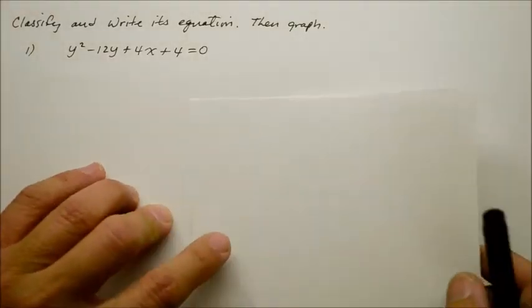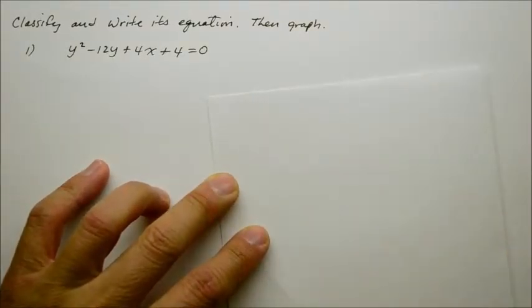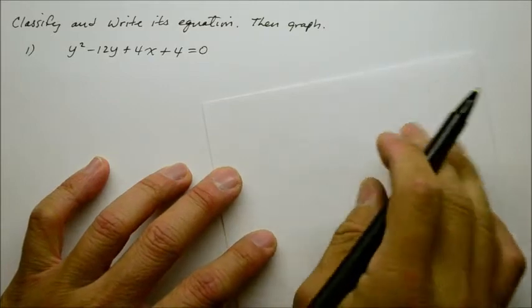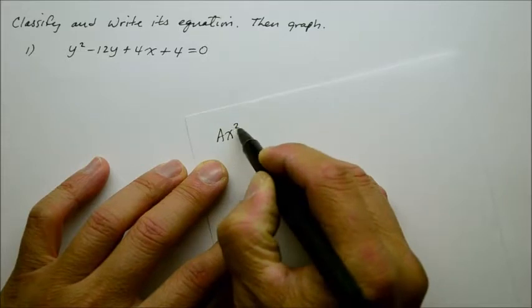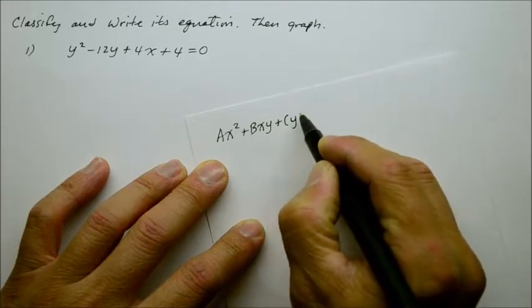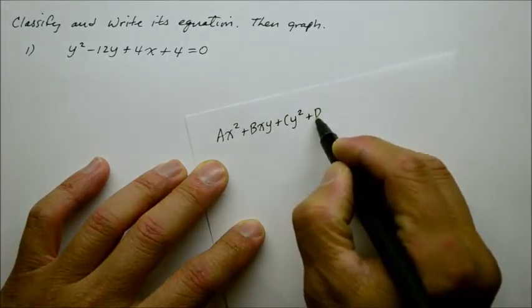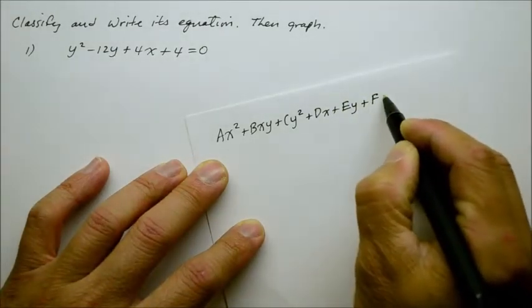Hi. This instructional video is about classifying and graphing conic sections. Number 1. In order to classify, I have to go over some of the basic rules here. First you have to understand the standard form in order to classify. It is given as ax² plus bxy plus cy² plus dx plus ey plus a constant f equals zero.